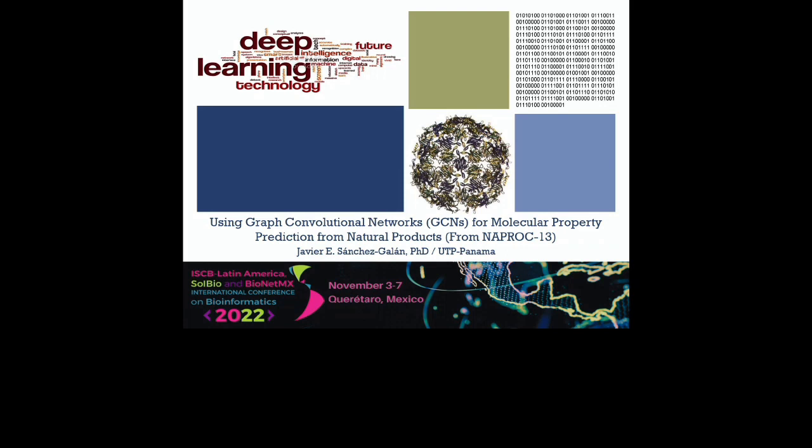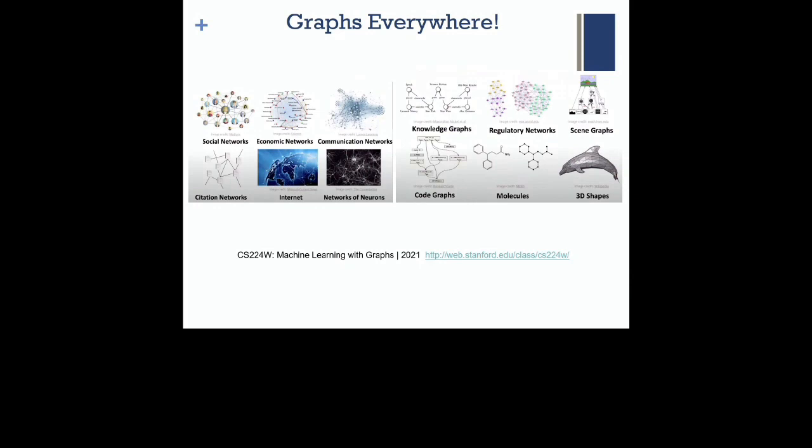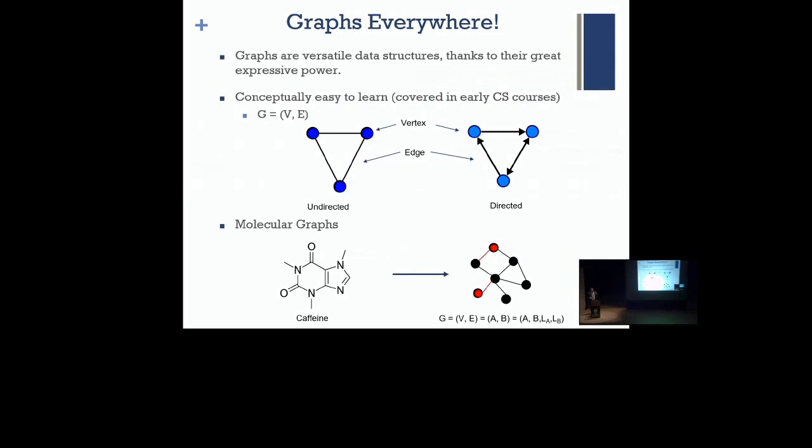I've been talking about graph convolutional networks and especially natural products in a specific database, the SNAPROC 13. Graphs are everywhere — if you were sitting here, graphs have come on and on in the screen — not only in bioinformatics, but they have many applications from social networks to any type of modeling and specifically to understand complex systems. So graphs are everywhere.